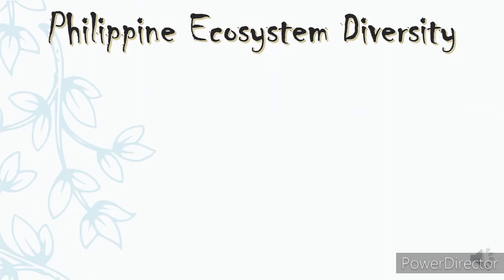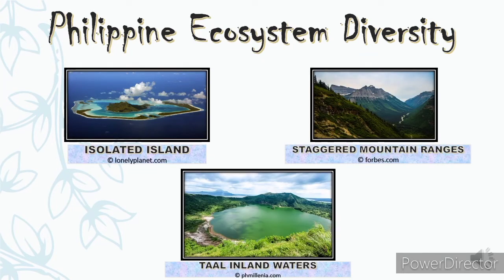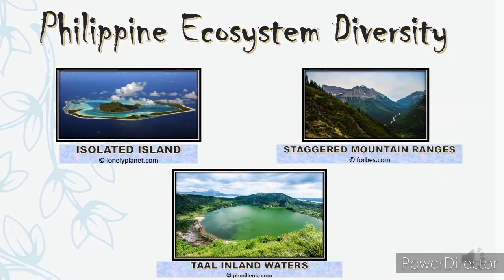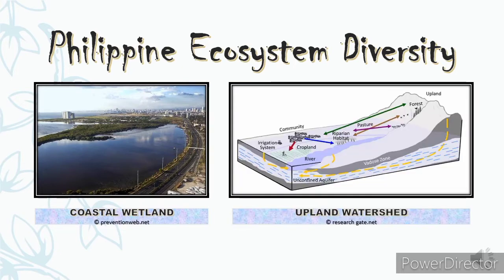Looking at biodiversity at the ecosystem level is a way of valuing and assessing the innate richness of the Philippines, taking into consideration the striking ecological functions and interrelationship of both the living and non-living components of the biosphere in a given location, as well as the effects of natural phenomena and man-made environmental changes upon them. The Philippines has a great variety of geographic features, from isolated islands enclosed by water to staggered mountain ranges and countless inland waters, making the country favorable for many types of ecosystems. Topography diverges extensively, from coastal wetlands to upland region watersheds.